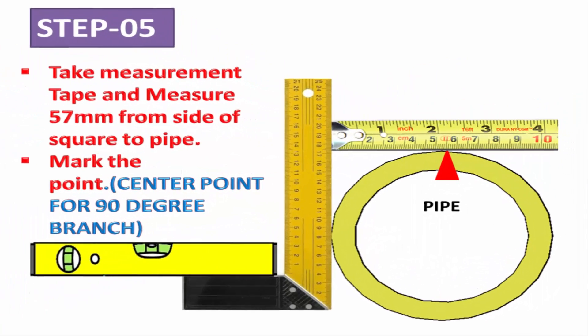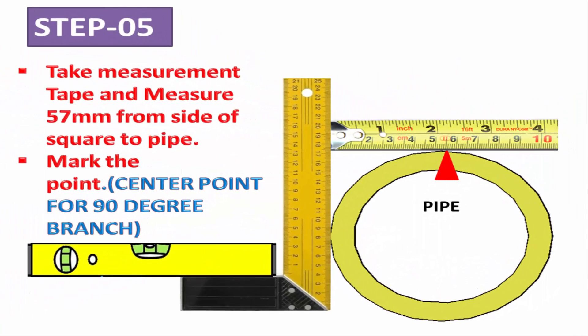Step 5: Take a measurement tape and measure 57 mm from the side of the right angle to the pipe, and mark that point.